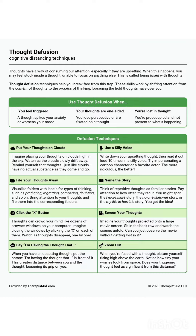File your thoughts away: Visualize folders with labels for types of thinking, such as predicting, regretting, comparing, doubting, and so on. Bring attention to your thoughts and file them into the corresponding folders.